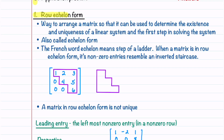Let's begin by learning all about row echelon form. Row echelon form is just a way to arrange a matrix so that it can be used to determine the existence and uniqueness of a linear system. That means you can use it to determine if it has no solution, one solution, or infinitely many solutions, and it's the first step in solving the linear system. It's also called echelon form. The French word echelon means the step of a ladder. When a matrix is in echelon form, its non-zero entries, such as the ones outlined here in purple, resemble an inverted staircase.